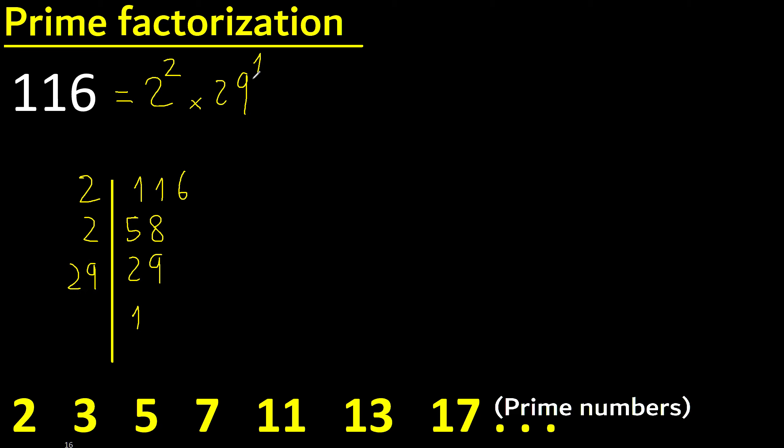Exponent is 1, therefore equal the same number. Prime factorization of 116 is 2² × 29. Thank you.